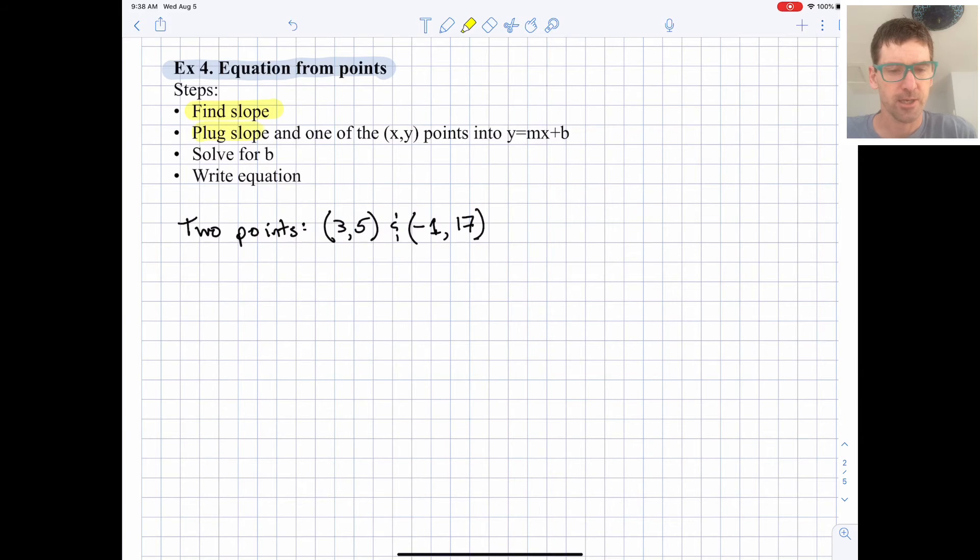So let's find the slope. Then we're going to take the slope and either one of our points, it doesn't matter which one we pick, but you can be clever and choose a simpler point. We're going to plug that into y equals mx plus b. We're going to solve for b and then once we know m and b we can write out the equation.